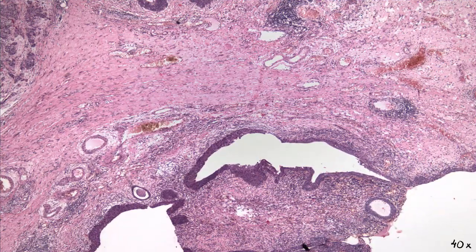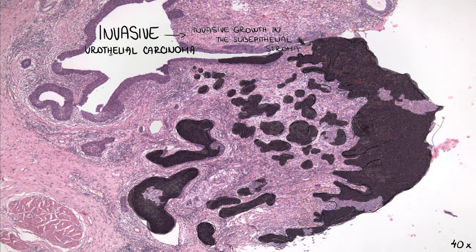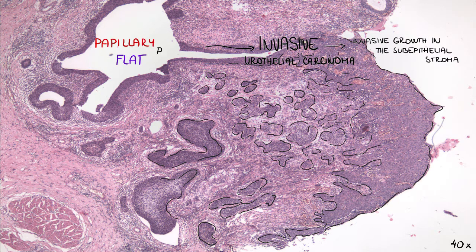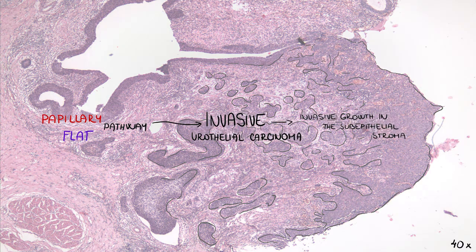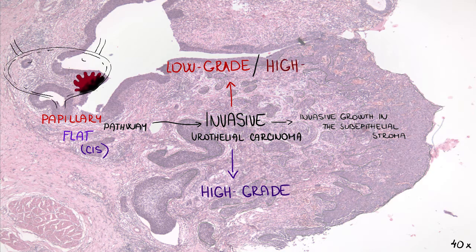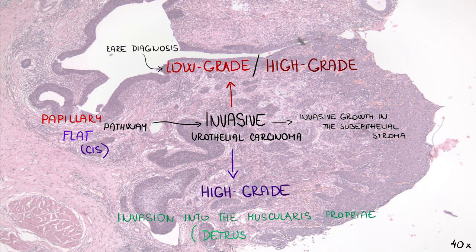Invasive urothelial carcinoma is defined by invasive growth in the subepithelial stroma, and as stated before, may progress from the papillary or flat pathway. Invasive carcinomas arising in the setting of flat carcinoma in situ are always high-grade. Carcinomas following the papillary pathway may be both low-grade and high-grade, though low-grade invasive carcinoma is a rare diagnosis. When invasion into the muscularis propria is present, all carcinomas are considered to be high-grade.